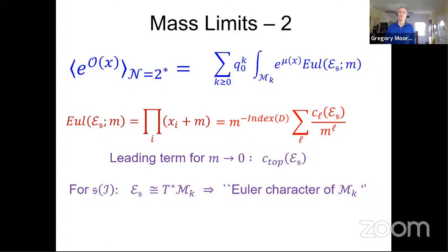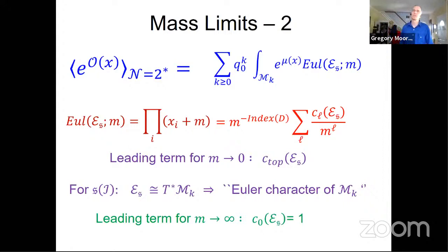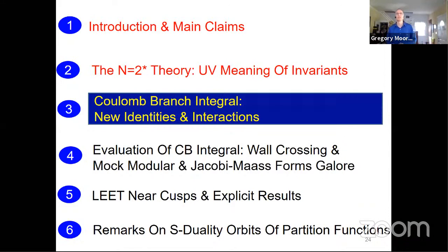Looking at the generating function, we take the equivariant Euler character, write it as a sum over splitting classes, and expand in inverse powers of M. If we take M to zero, the leading term is the top Chern class, and with the distinguished UV spin-C structure that bundle E is the cotangent bundle of the moduli space of instantons, giving the Euler character of instanton moduli space. If we take the mass to infinity, the leading term is C0 = 1, so we just have e to the mu of x — that's the Donaldson invariants. This explains why that limit has something to do with Donaldson invariants.